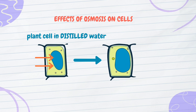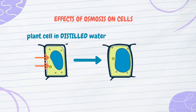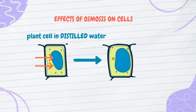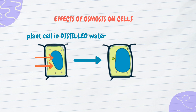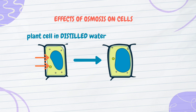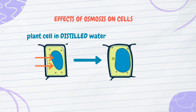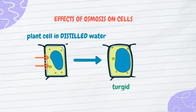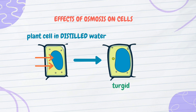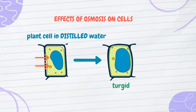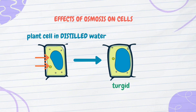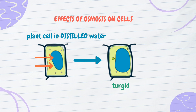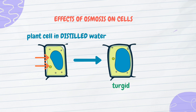However, as the cell wall is tough and rigid, it prevents the cell from overexpansion and bursting. So the plant cell becomes swollen or turgid, as shown by the image. Turgidity is important to plants as it enables small plants such as flowers to stand upright.